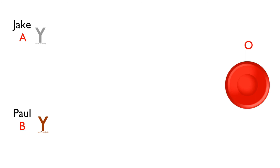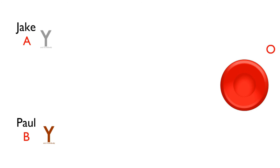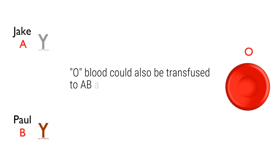Remember, blood group O has neither antigen A nor antigen B on the cell surface of the red blood cell. So what will happen if we transfuse O blood to Jake and Paul? Due to the absence of the antigens in the O blood, it will not produce any kind of reaction in their bodies. O blood can also be transfused to any person with blood group AB, and of course to a person with the same blood group O. That is why blood group O is called the universal donor.